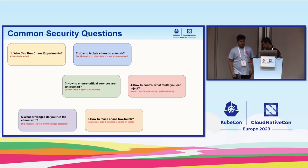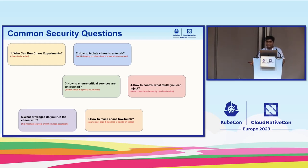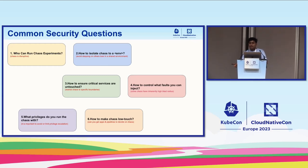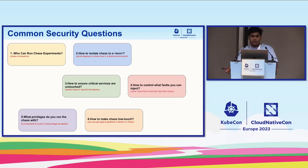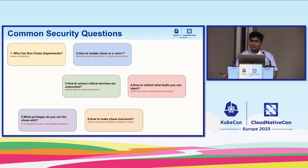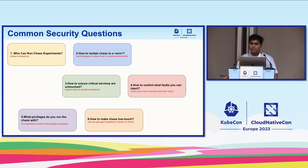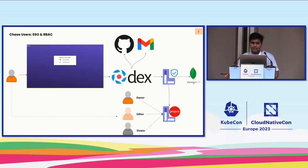Thanks Uma. I'll try to answer all these common questions which our community and users keep asking. To start with, we have the first question: who can run the chaos experiment? Is it open for everyone? Is there any authentication or authorization? Let's go to the next slide. Here you can see we have a tight integration with DEX. DEX is an open OIDC — it's open source — where you can define your own OAuth providers. For example, I have defined OAuth providers like GitHub and Google.